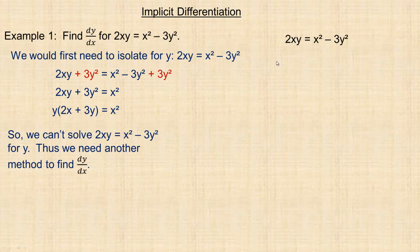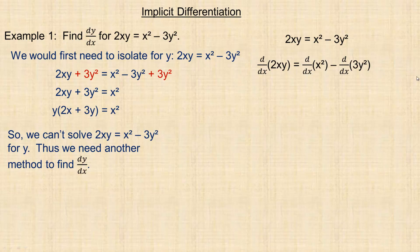What we're doing in implicit differentiation is taking the derivative of both sides. The derivative is actually a noun — it's a thing. But this d/dx symbol is a derivative operator, it's a doing thing. It says we're going to take the derivative of 2xy, the derivative of x squared, the derivative of 3y squared — it's called a derivative operator.